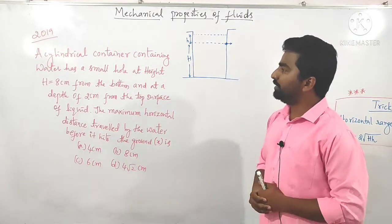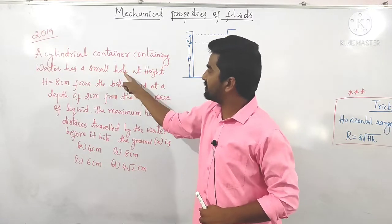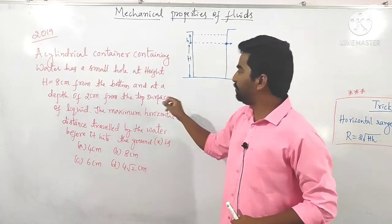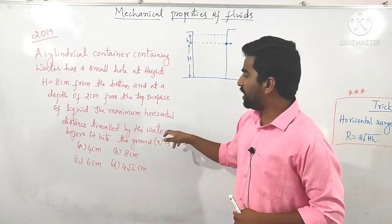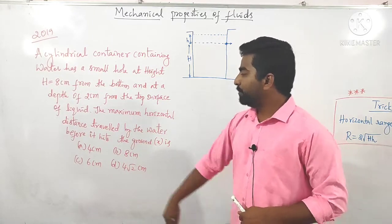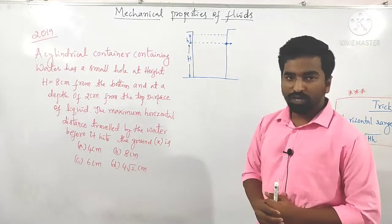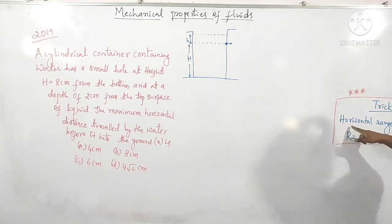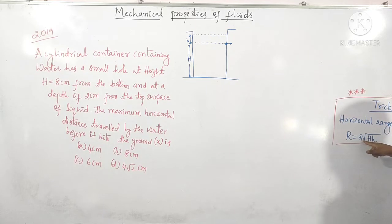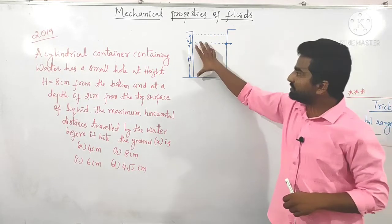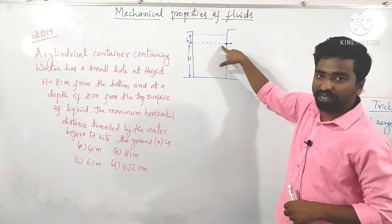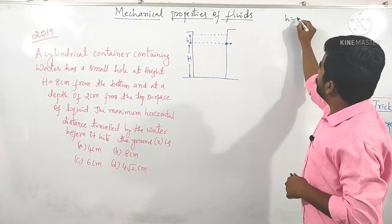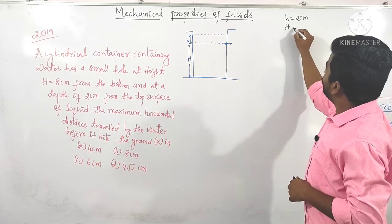The next question was asked in 2019. A cylindrical container containing water has a small hole at height H = 8 cm from the bottom and at a depth of h = 2 cm from the top surface of the liquid. The maximum horizontal distance travelled by the water before it hits the ground is asked, with four options given.